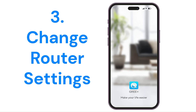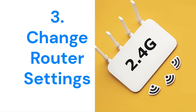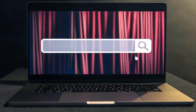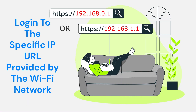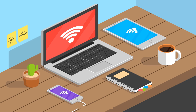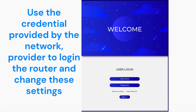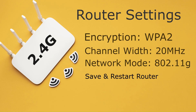If the GRI-Plus app does not show your AC unit, you need to change some router settings. Open a browser on your laptop and log in using the specific IP URL provided by your Wi-Fi network. Ensure that you are connected to the same Wi-Fi router on your laptop. Use the credentials provided by the network to log in to the router. Look for a section labeled Wireless Settings, Wi-Fi Settings, or similar.